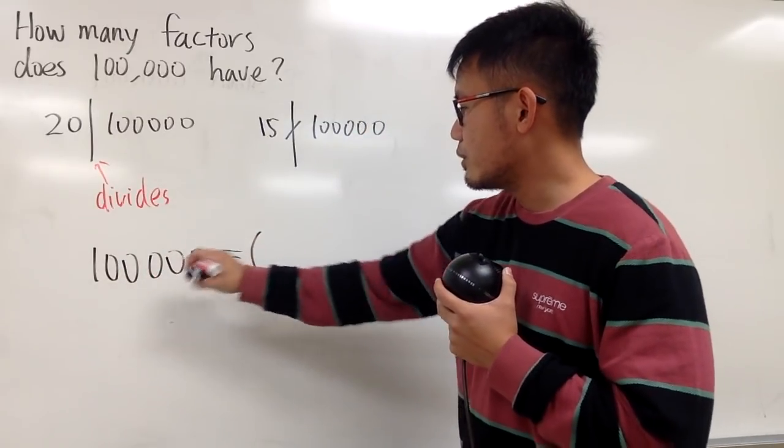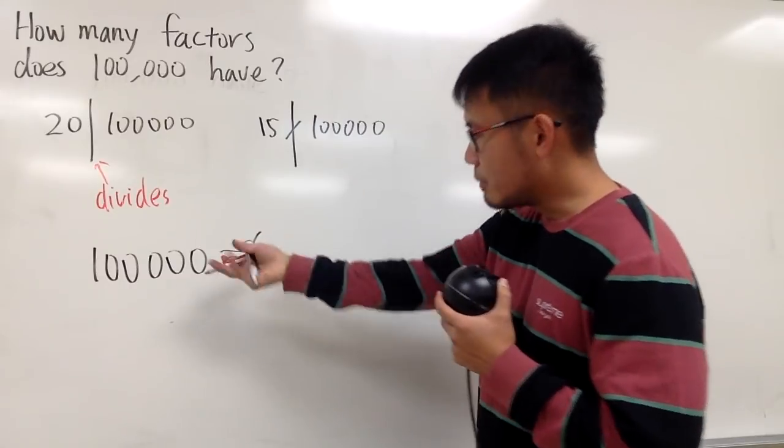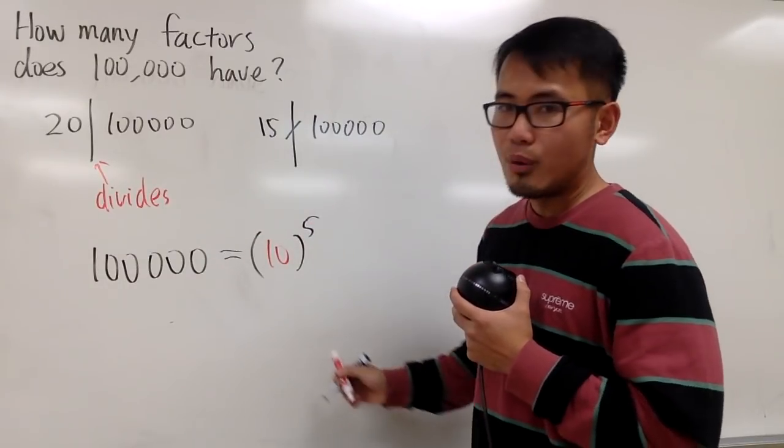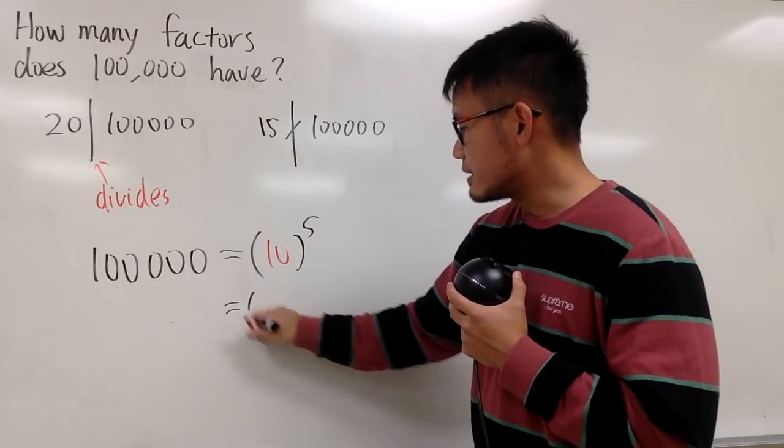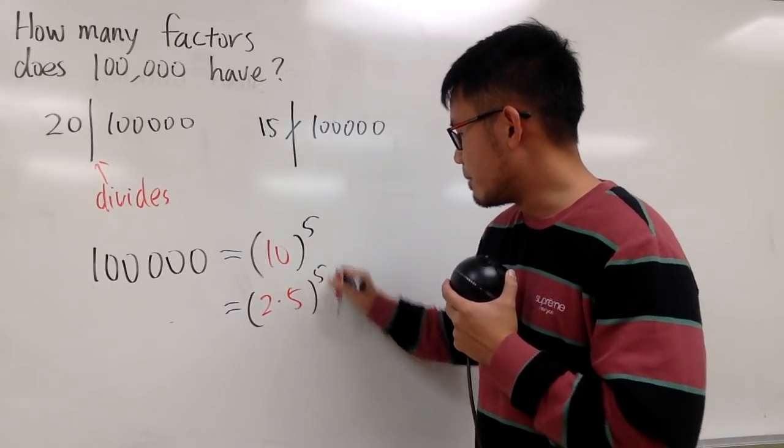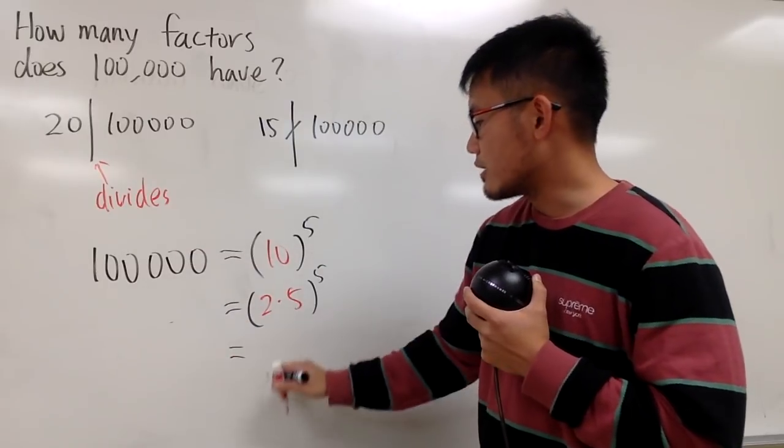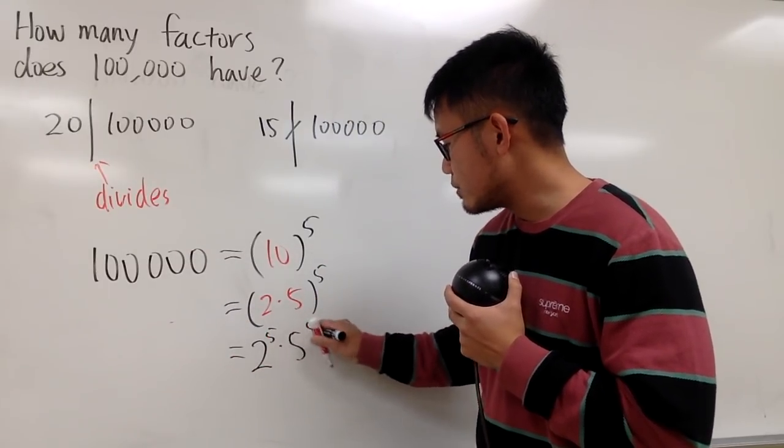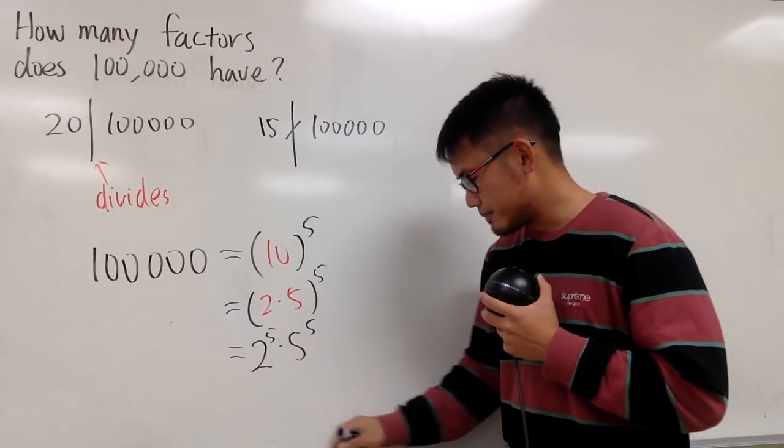This right here, it's equal to, well, we have a lot of zeros. How many? Five of them, of course. So that's 10 to the fifth power. And 10 is the same as 2 times 5, right? And then to the fifth power. So, in other words, 100,000, I can break it down as 2 to the fifth times 5 to the fifth. Cool, huh? Now, let's see.